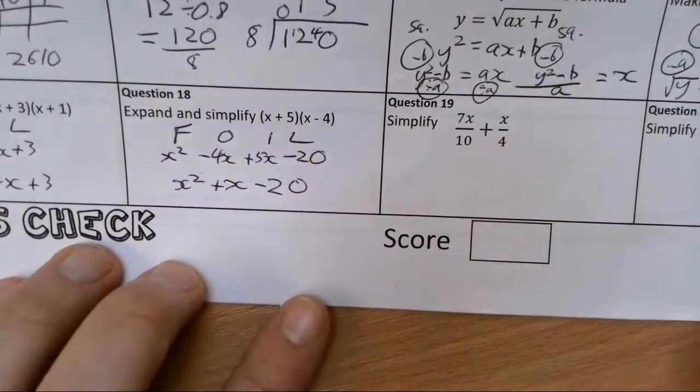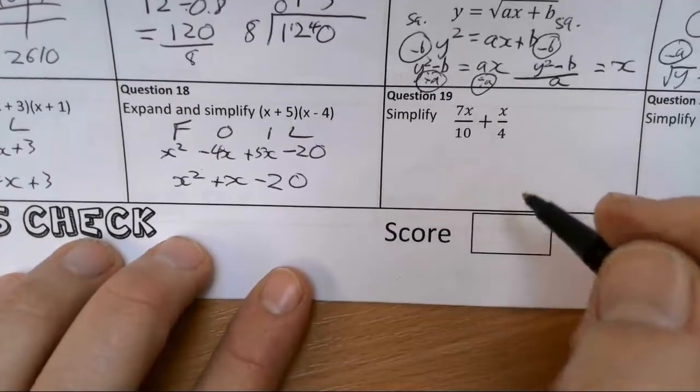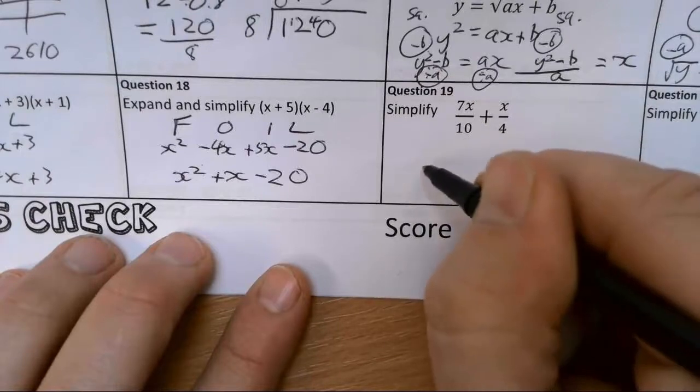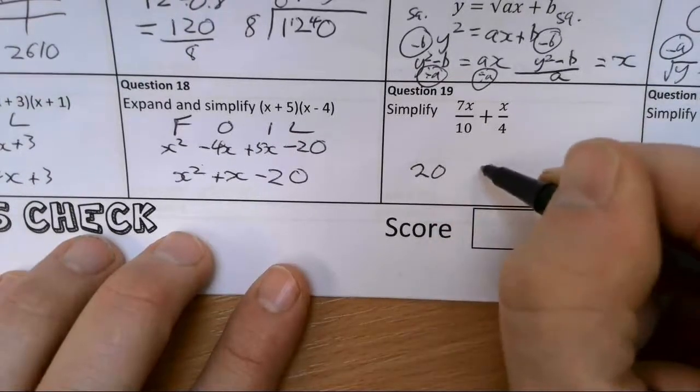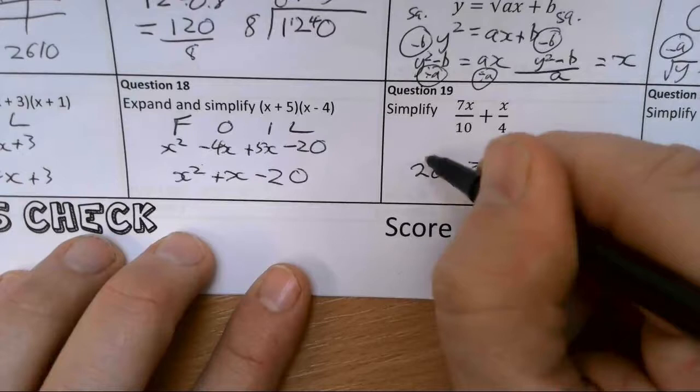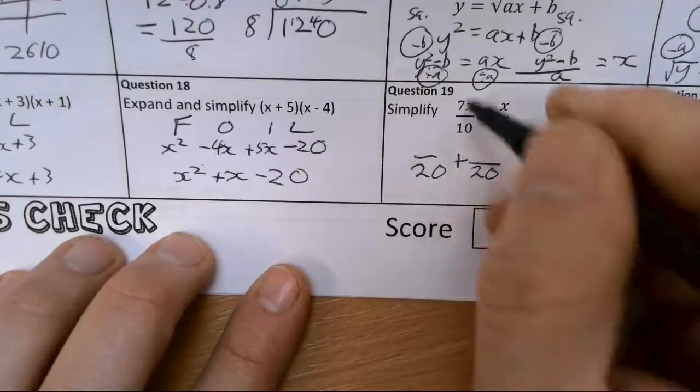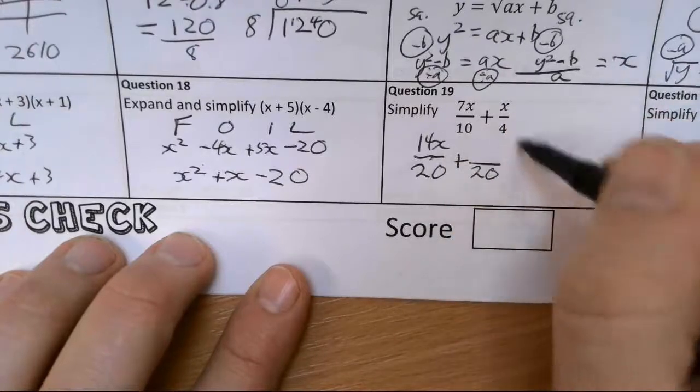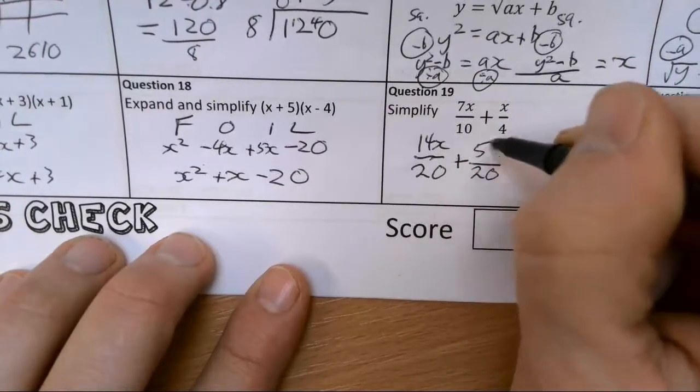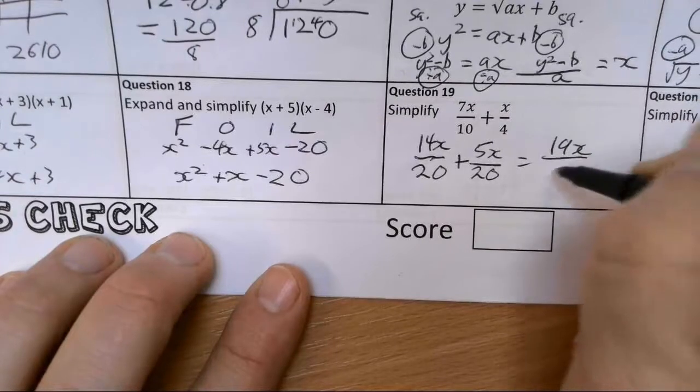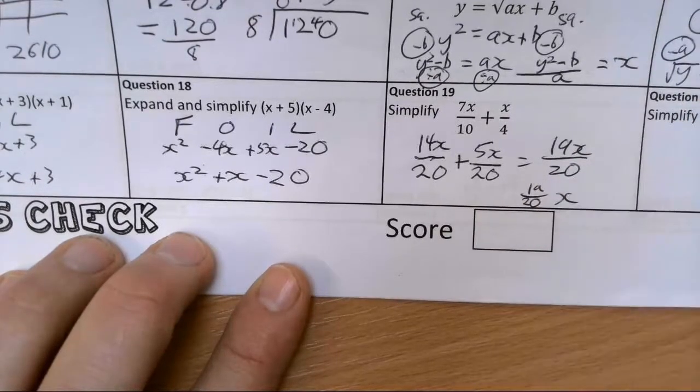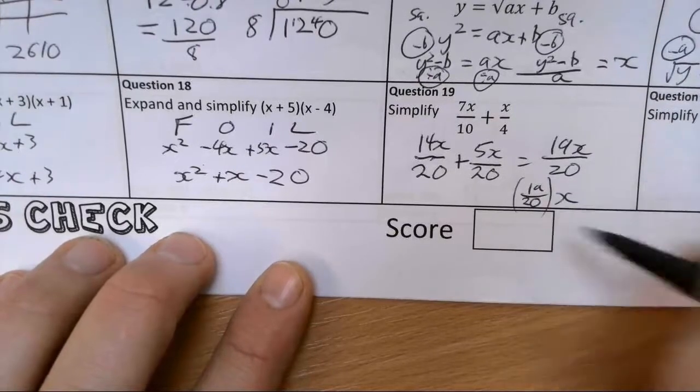Question 19. We want lowest common multiple as a denominator. So I'm going to go for the lowest common multiple of 10 and 4 which is 20. So we've got 20, and we're going to add with that. So times by 2, times by the top by 2, we've got 14x. Times by 5, times the top by 5, we've got 5x. So we've got 19x over 20, which we can also write as 19 twentieths of x. So you can have it either way around.